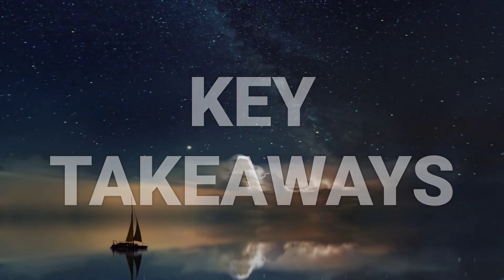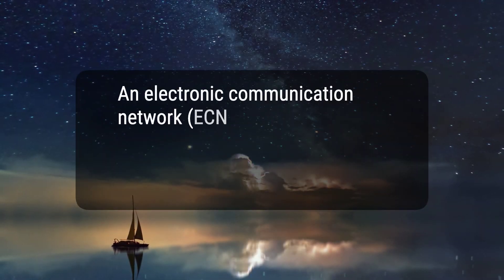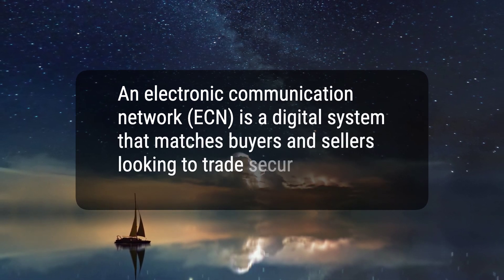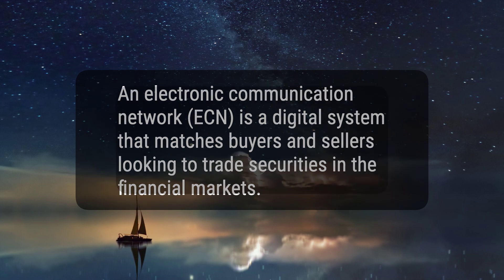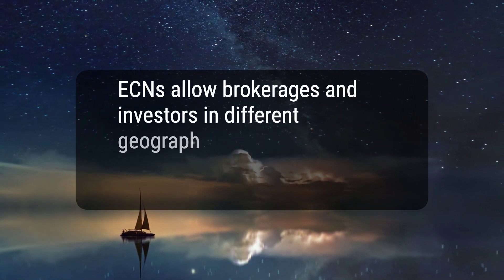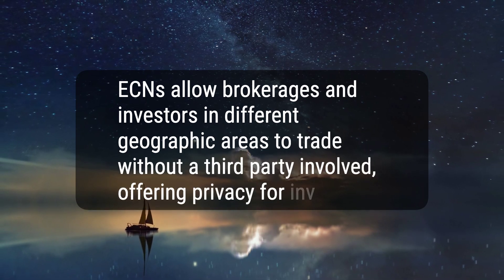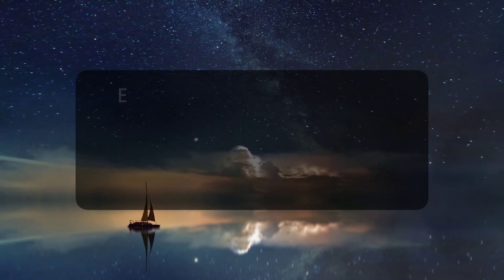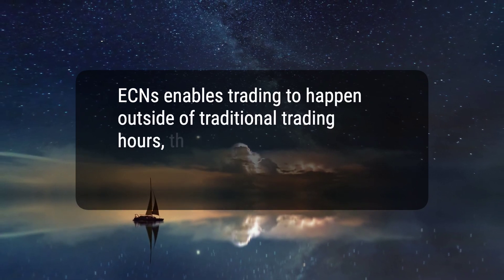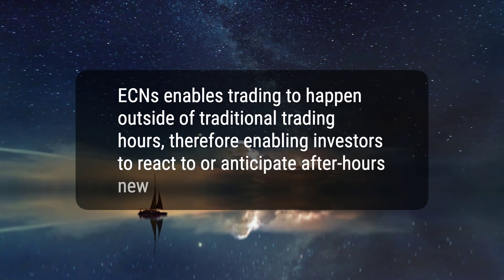Here are five key takeaways. 1. An electronic communication network, ECN, is a digital system that matches buyers and sellers looking to trade securities in the financial markets. 2. ECNs allow brokerages and investors in different geographic areas to trade without a third party involved, offering privacy for investors. 3. ECNs enable trading to happen outside of traditional trading hours, therefore enabling investors to react to or anticipate after-hours news.